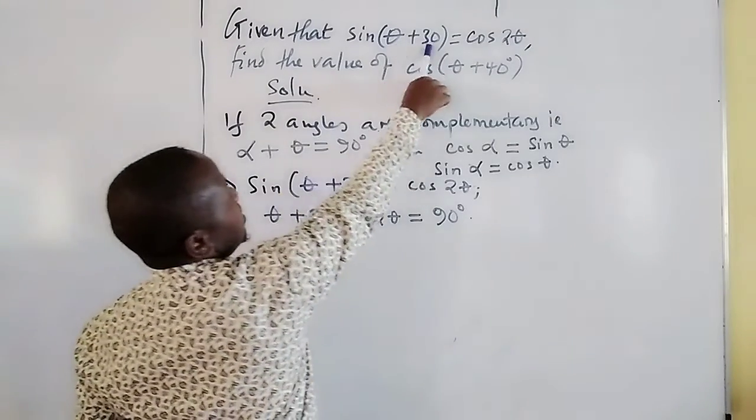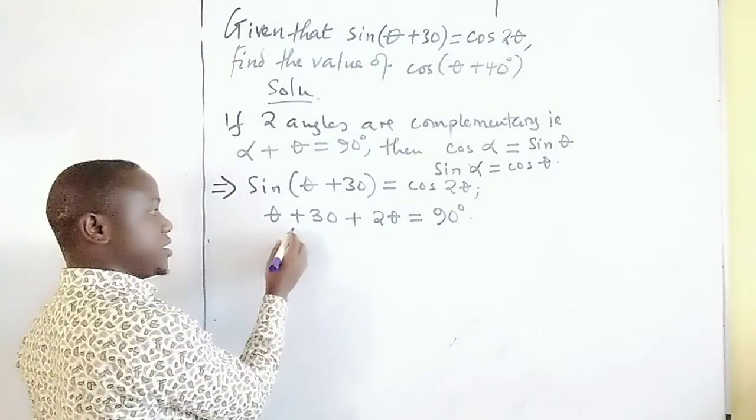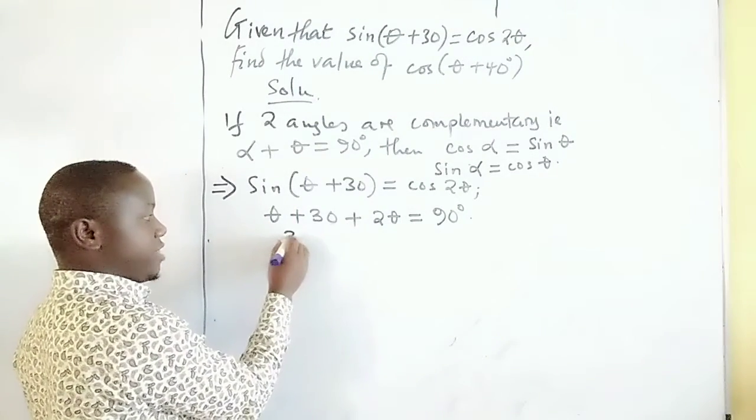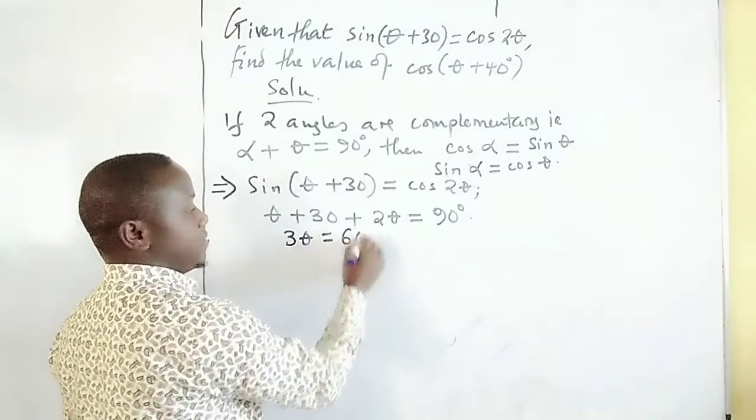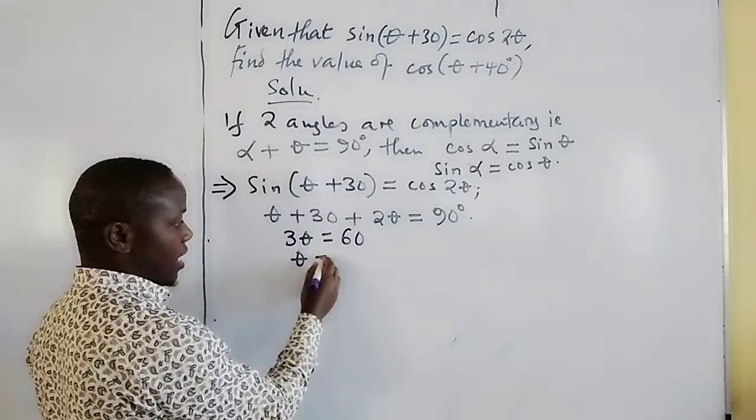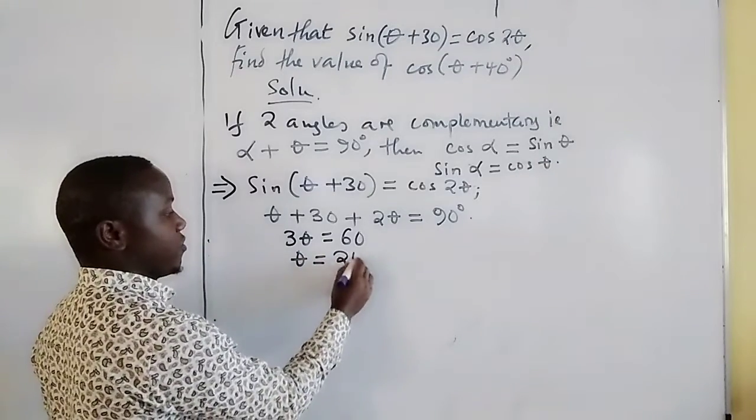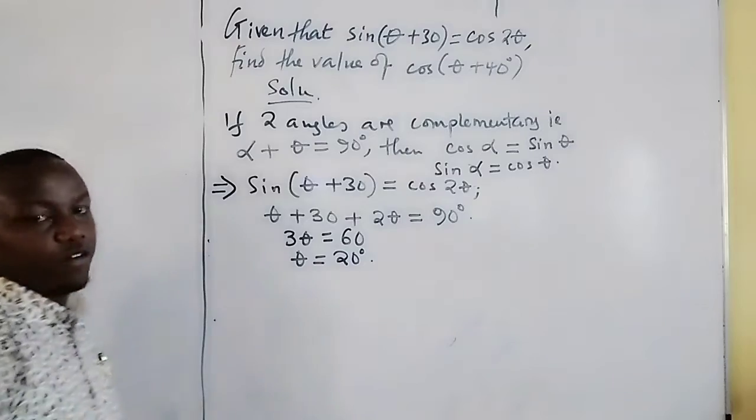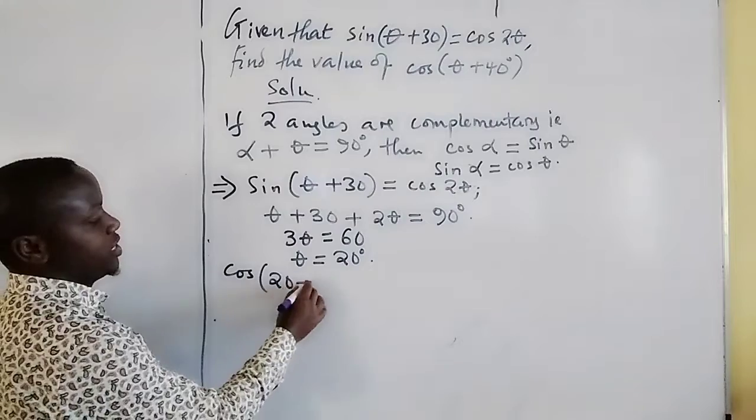Therefore, equating this, we will have like terms together: 3θ = 90° - 30° = 60°, so θ = 60°/3 = 20°. Therefore θ is 20°. Now we are finding cos(θ + 40°), which is cos(20° + 40°).